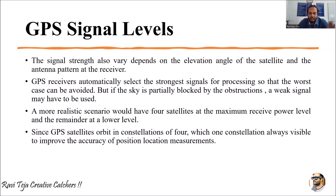GPS signal levels depend on the position of the satellites, the elevation angles of the satellites, and the patterns of the antennas used in the GPS receivers. The ultimate goal is to correlate the strongest signal. Between four to ten satellites can connect to a GPS receiver; in reality, three satellites establish the position and the fourth minimizes the error with respect to the code.